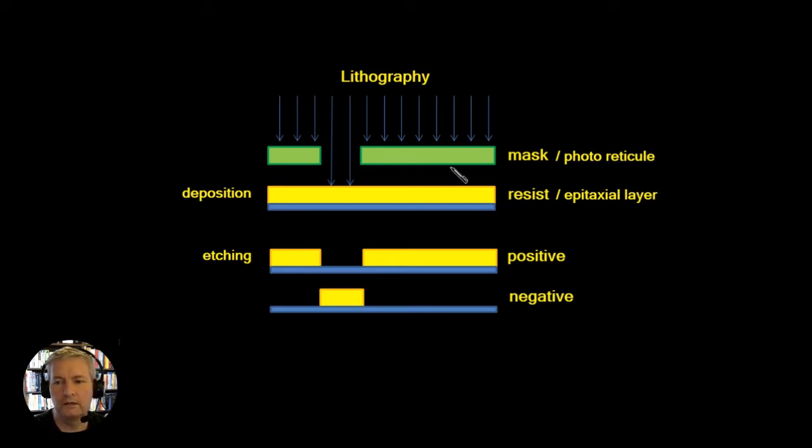We then create something called a photoreticule or it's shortened to a mask and this is like the negative in a photograph. This photoresist is ultraviolet sensitive, that is sensitive to light. So what we can do is we can create a pattern on this mask, we can shine the light on this pattern and whenever the light hits the resist it's going to act on this photoresist.